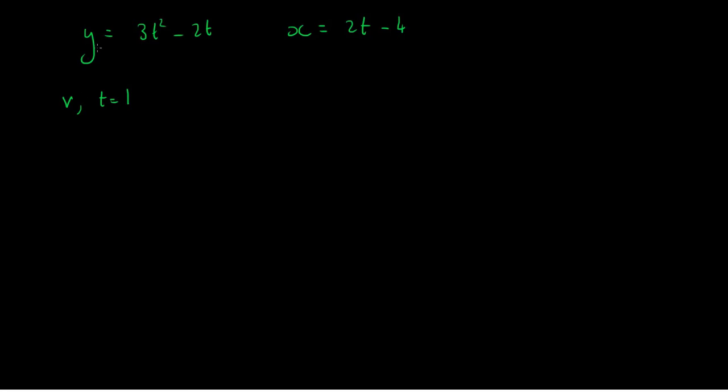Okay, so to get the speed, we need to differentiate each of these and then apply our Pythagorean law. So y-dot is equal to the first derivative of this with respect to time, d by dt of 3t-squared minus 2t, and x-dot is equal to the first derivative of this with respect to time, d by dt of 2t minus 4.